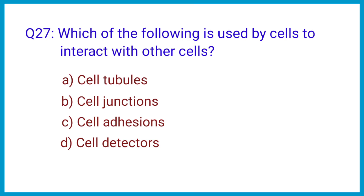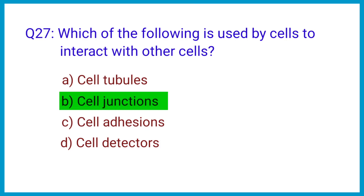Question number 27. Which of the following is used by cells to interact with other cells? The correct answer is option B: Cell junctions.